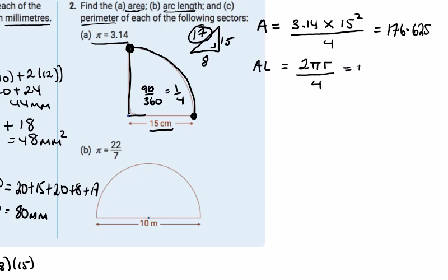So it's equal to pi r over 2. That's equal to 3.14 times 15, which is the radius, divided by 2, which is 20 something, 23.55 centimeters.